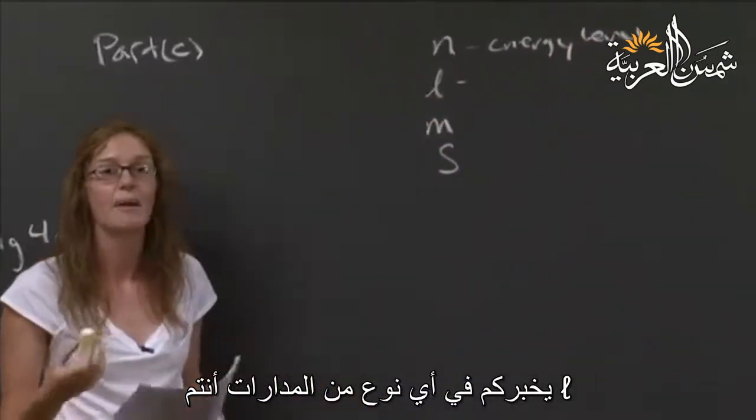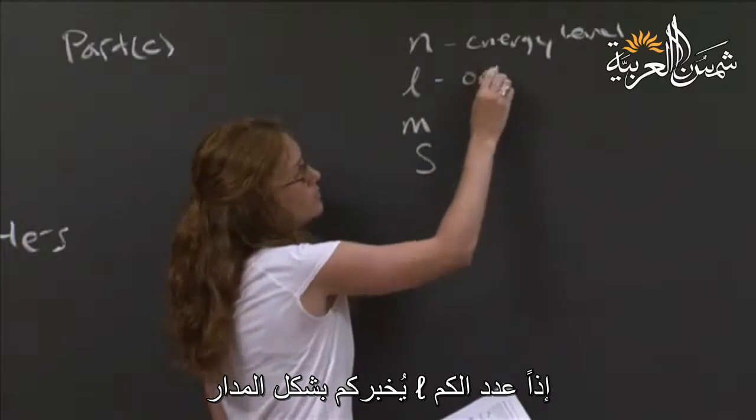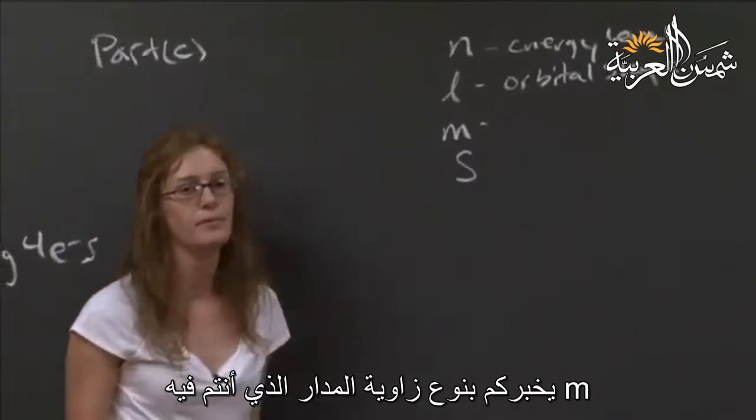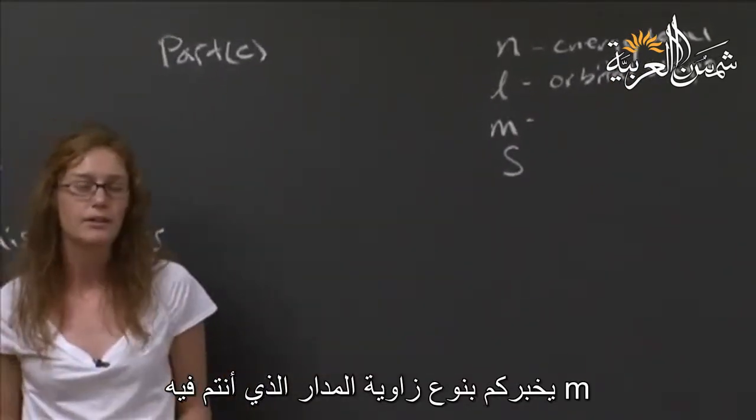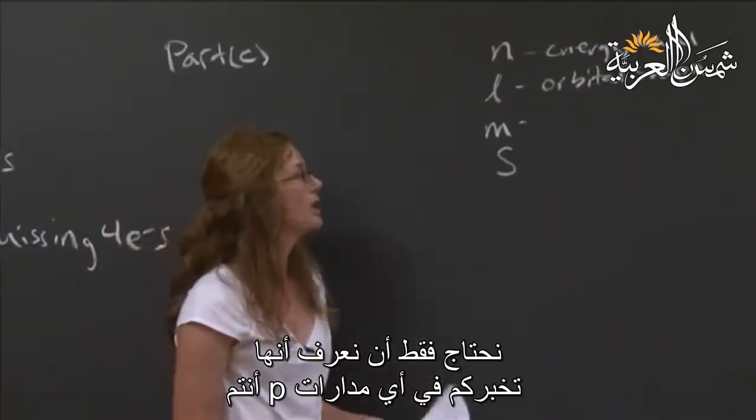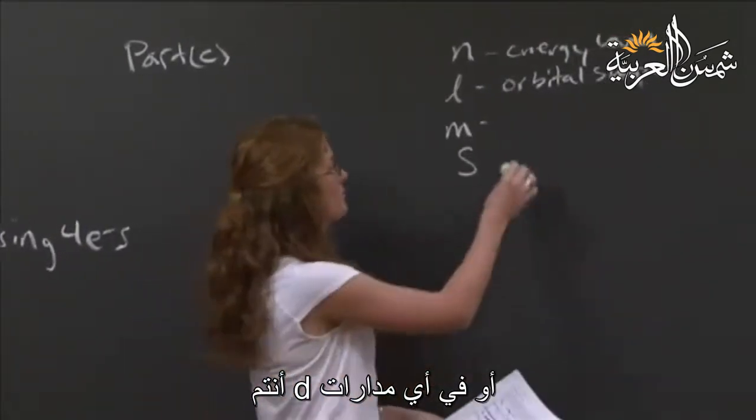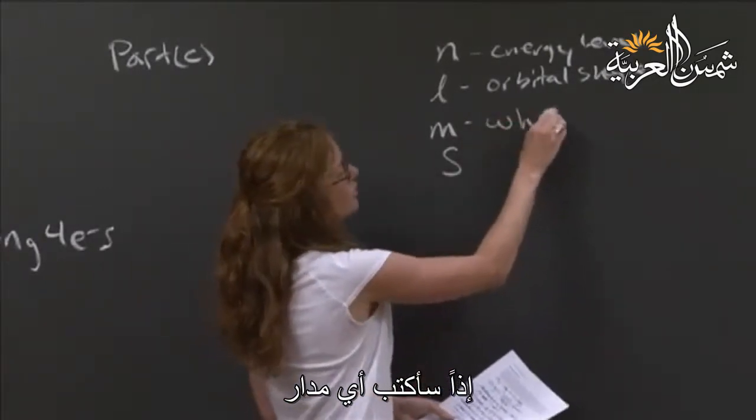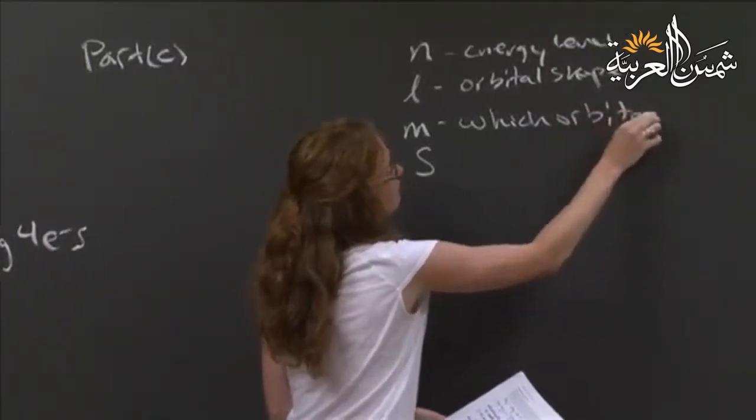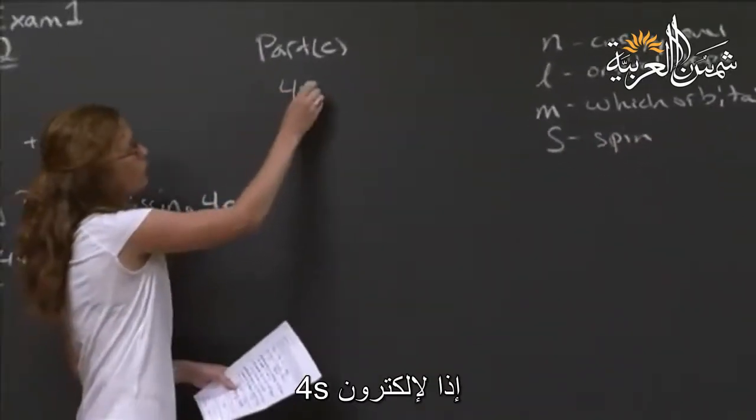L gives you what type of orbital you're in, if you're in the S, the P, the D. I just call it, it tells you your orbital shape, basically. M gives you the angular identity of the orbital you're in. We didn't really talk about that in depth. We just need to know it tells you which of the P orbitals you're in, or which of the D orbitals you're in. And the S is your spin. For a 4s electron, it doesn't actually matter what the identity of our species is. That he tells us iron is kind of extra information. A 4s electron already has three of its quantum numbers set.